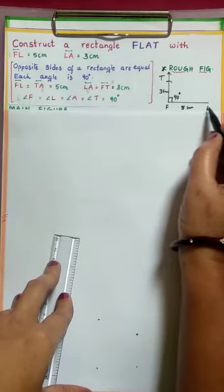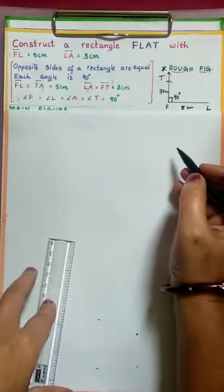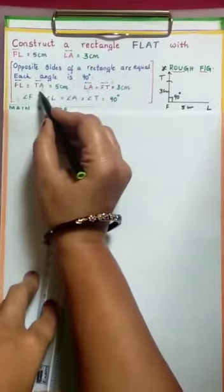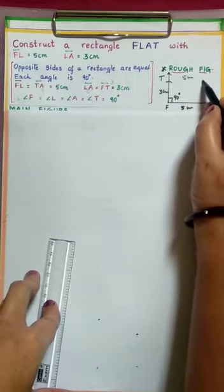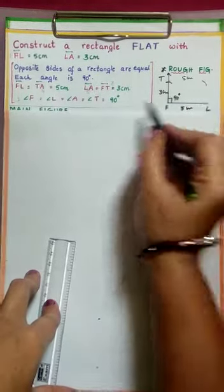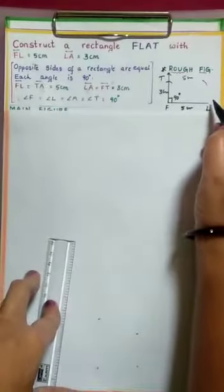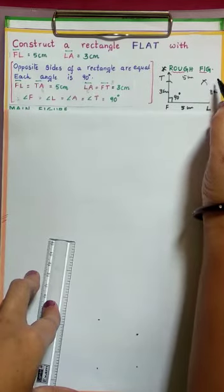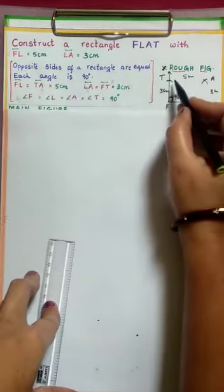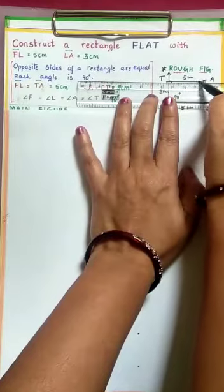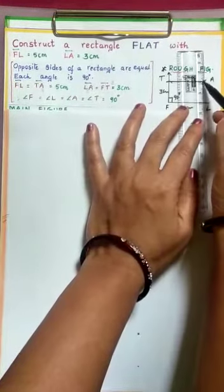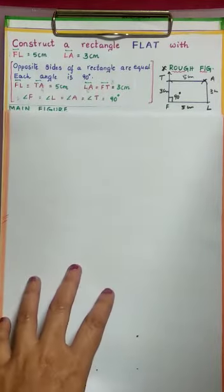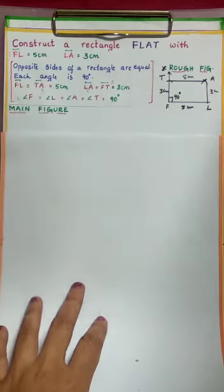The length opposite to FL is also 5 cm. So next we have to construct TA — with T as center, taking 5 cm radius, draw an arc. Taking L as center, 3 cm radius, cut this arc which intersects at A. Now we join TA and AL. So the rectangle is constructed — this is the rough figure, and following this rough figure we do the main construction.